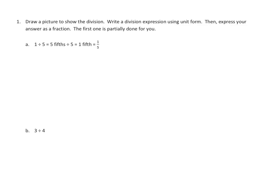The instructions say: draw a picture to show the division, write a division expression using unit form, then express your answer as a fraction. The first one is partially done for you. We start with the division problem as 1 divided by 5. Well, 1, when we break it into unit form using fifths, becomes 5 fifths. Then we're going to keep the divisor the same. So 5 fifths divided by 5 equals 1 fifth, that's the unit form, then we convert it to fraction form.